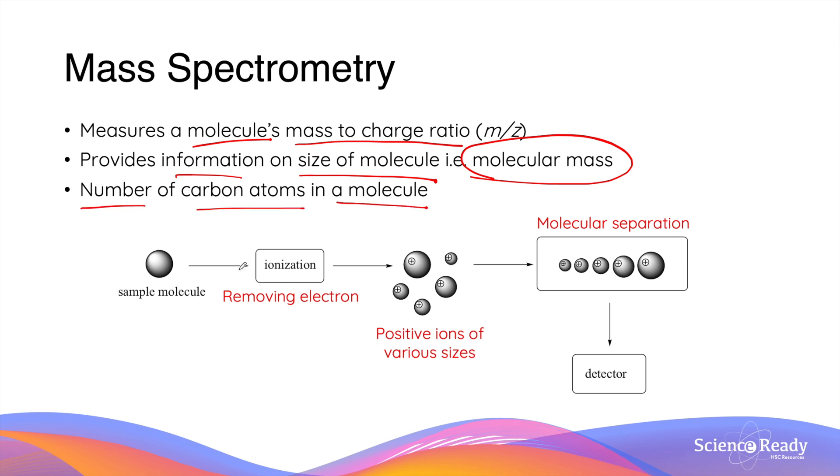The process undertaken during mass spectrometry can be summarized by this diagram. A sample molecule undergoes ionization by removing its electrons. Through the removal of electrons, the sample molecule is converted into positive ions of different sizes. These positive ions are then sorted by their different sizes, which are then analyzed in a detector at the very end of the mass spectrometry machine.